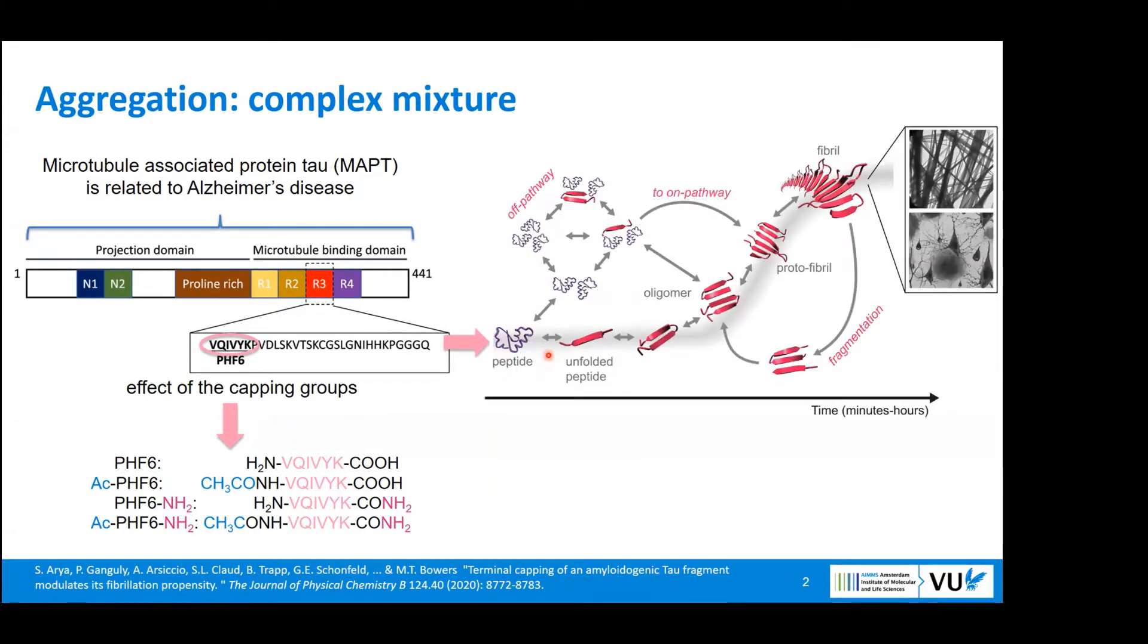Aggregation, in general, is the transition from a soluble peptide into insoluble and highly ordered amyloid fibrils. Along this process, there are multiple steps present and many intermediates are involved. We focus on the first stages of aggregation and on oligomers, because they are considered to be the most toxic ones.